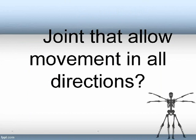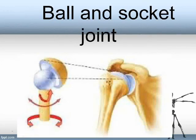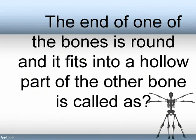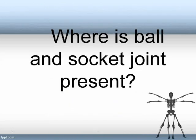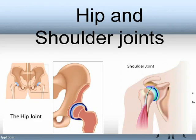Which joint allows movement in all directions? Ball and socket joint. The end of one of the bones is round and it fits into a hollow part of the other bone — this is called a ball and socket joint. Where is ball and socket joint present? Hip and shoulder joints.